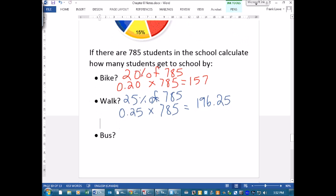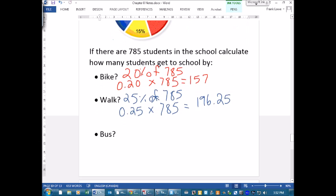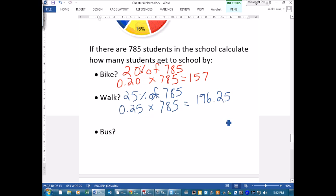And then bus, what is bus? Bus is 40%. So we're going to go 40% of 785, same process, right? 0.40, don't need the zero there, that's okay, times 785. And we plug that baby in, and we get 314 students.